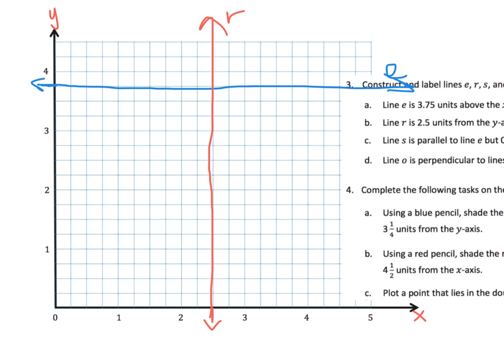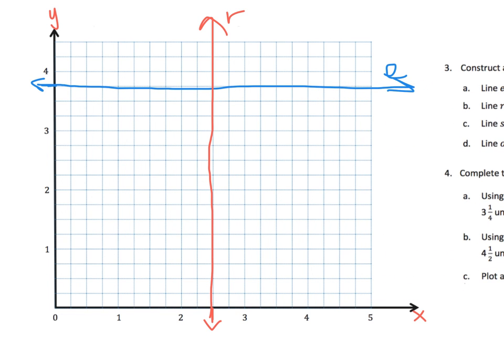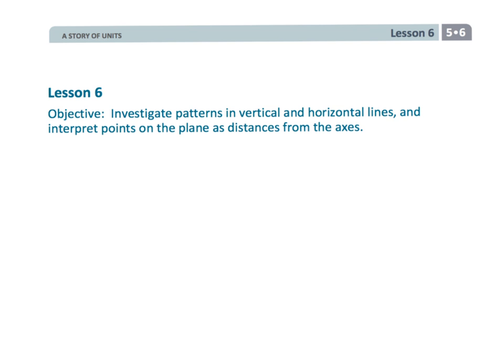So parents and teachers, go slow in order to go fast. Allow your students the opportunity to grapple with all of those vocabulary words in order to really have access to the high-level math content. And that wraps up 5th grade module 6, lesson 6. We're investigating patterns with vertical and horizontal lines.